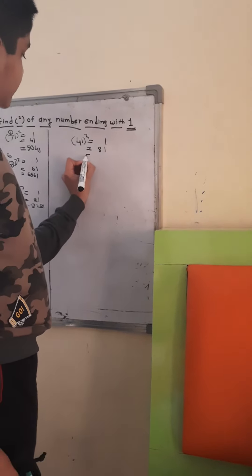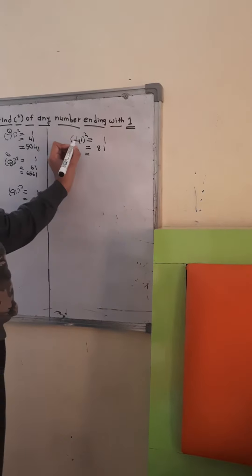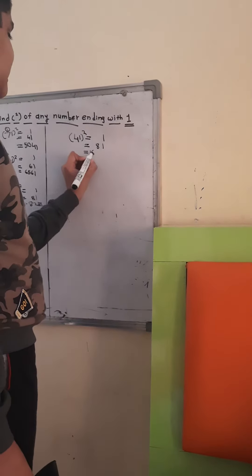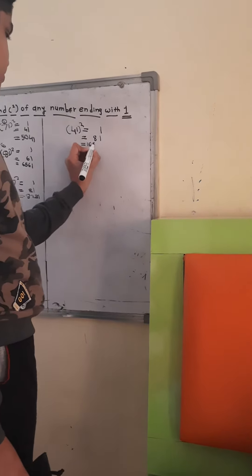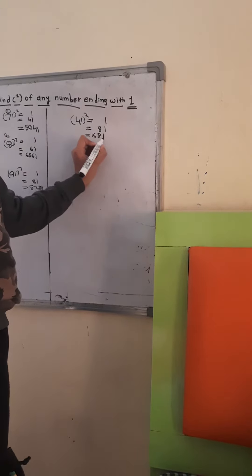And then, when we do this, then we have to put another equal to sign, and then we have to find the square of 4, which is 16, and then 81. So, we have to write, copy down, 81 here. So, this was 41 square.